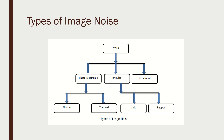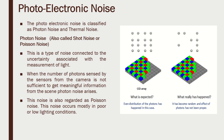What are the types of image noise? Image noises are broadly classified as photo-electronic noise, impulse noise, and unstructured noise. Within photo-electronic noise, we have photon noise and thermal noise. Within impulse noise, we have salt and pepper noise. We will learn all these types of noise with clear explanation and understanding in this session and the sessions to follow.